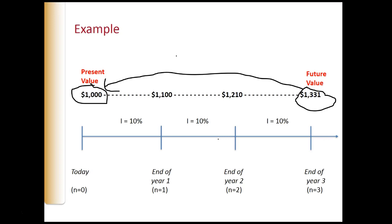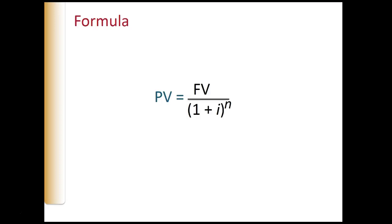Continuing with the example, assuming a discount rate of 10%, the present value of receiving $1,331 in three years is $1,000 — we could figure this by working backwards from the future value. The timeline depicts the relationship between present value and future value. To calculate present value, we can use a formula: present value equals future value divided by (1 plus interest) to the nth power.